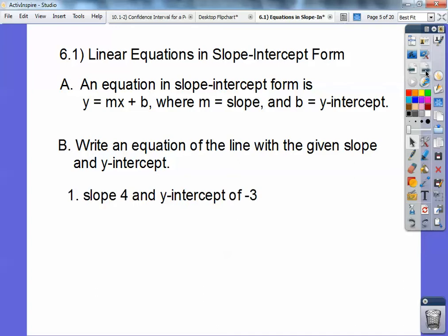Here's number one, slope four, y-intercept of negative three. Pause it so you can write this down. This is nice and easy, you guys. It's y equals mx plus b. This is my m. This is my b, so it's just the answer staring right at you. y equals 4x minus 3.